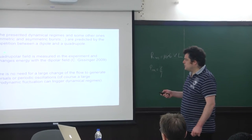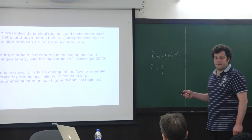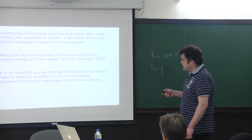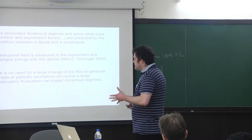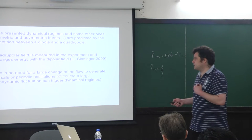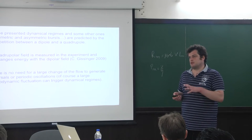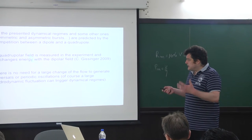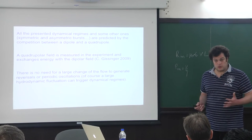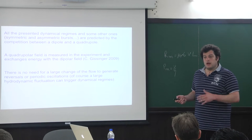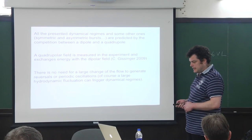There is no need for a large change of the flow to generate reversal or periodic oscillation. If you are close enough to the saddle-node bifurcation, even moderate fluctuations can trigger reversals. A scenario for reversal does not have to imply a very strong modification of the flow — a strong modification can trigger a dynamical event, but it is not necessary.